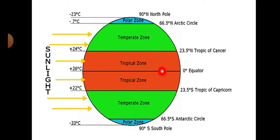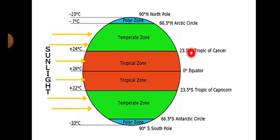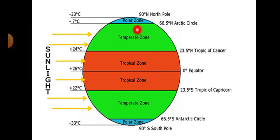The tropical zone is the region located between the Tropic of Cancer and the Tropic of Capricorn — from the equator up to the Tropic of Capricorn and equator up to the Tropic of Cancer. The temperate zone is located between the Tropic of Cancer and the Arctic Circle, and the Tropic of Capricorn and the Antarctic Circle. The polar zone is located between the Arctic Circle and the North Pole, and the Antarctic Circle and the South Pole.